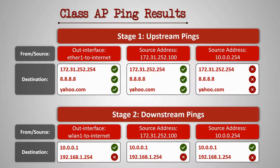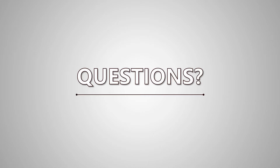Based on these results, we have two questions for you. Why is the class AP unable to ping its upstream network from the source address 10.0.0.254? And what is the reason behind its inability to ping the destination 192.168.1.254? See if you can come up with a solution.